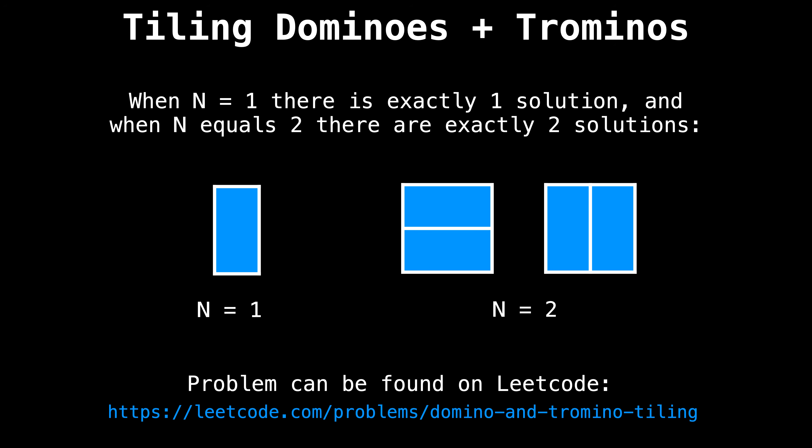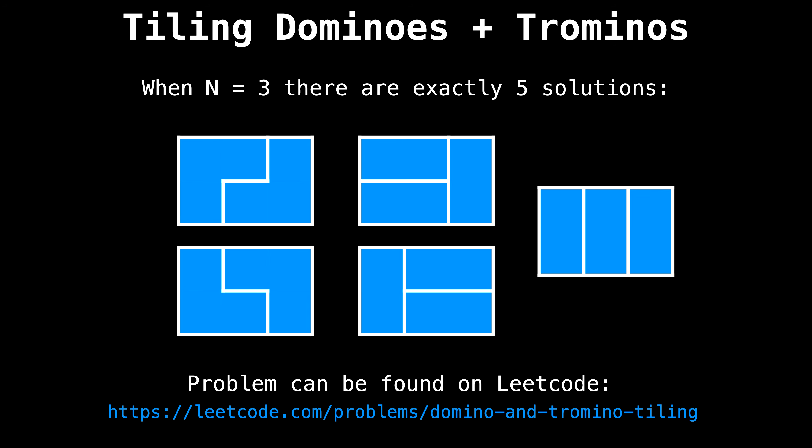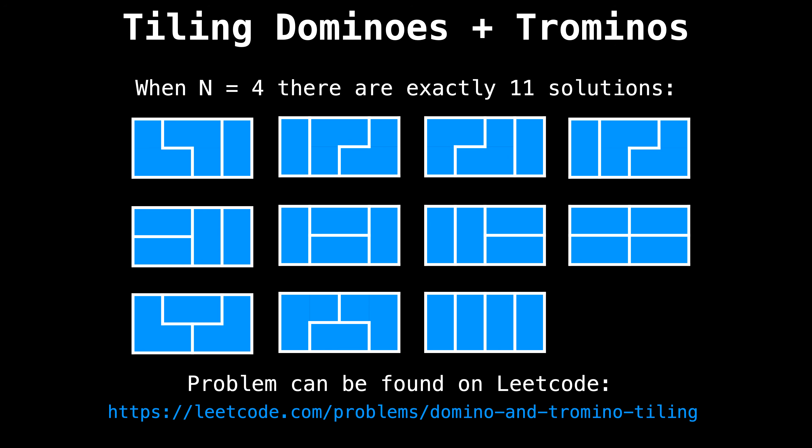Let's look at a few examples of some tilings. From the drawings below, you can see that when the board is one unit wide, there is exactly one solution. And when n equals two, there are exactly two solutions. When we start getting to a board with a length of three, things start getting slightly more interesting, because now we're not only able to place dominoes, but also trominoes. In this situation, we're able to tile the board in exactly five ways. And when n equals four, you can see that there are exactly 11 solutions.